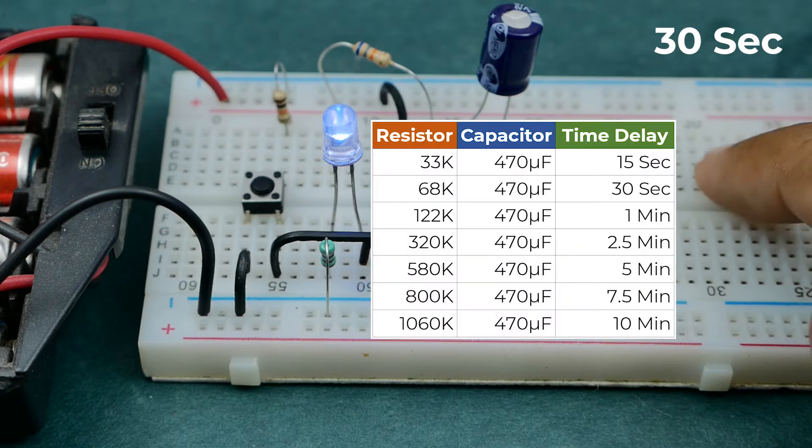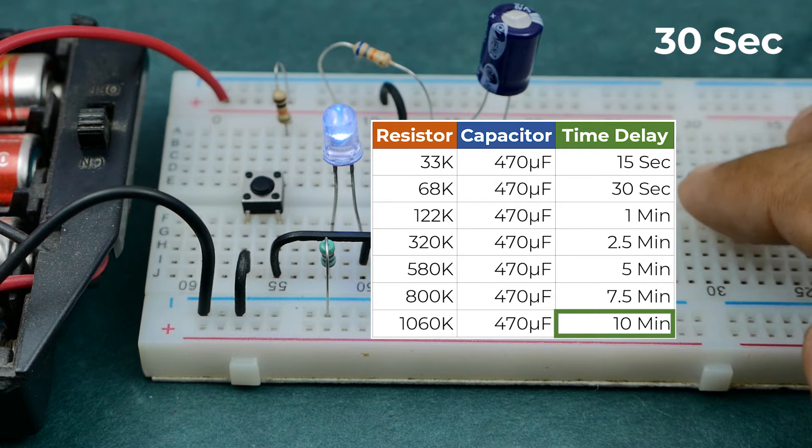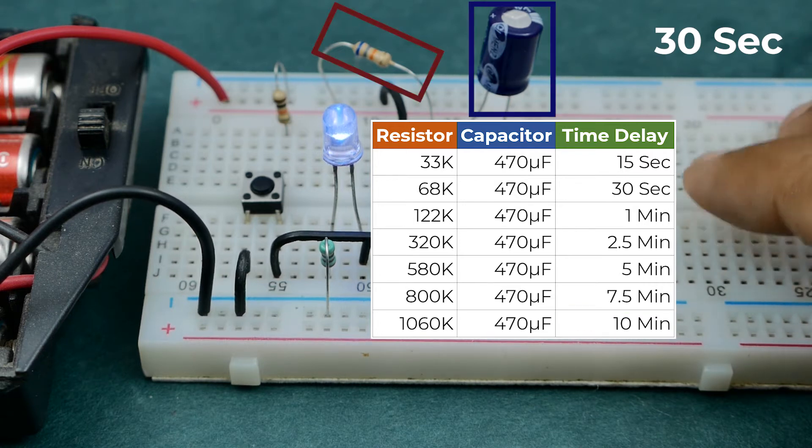You can also adjust the timer to any fixed duration like 1, 5, 10 minutes, etc. by changing the value of this resistor or capacitor. We'll discuss more about that later in this video.